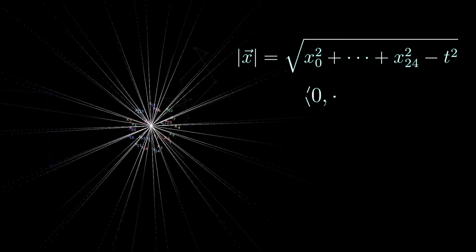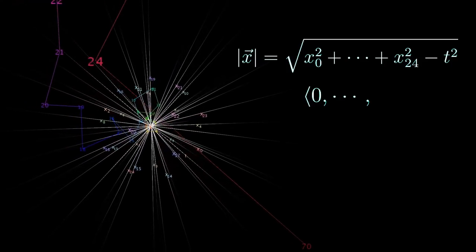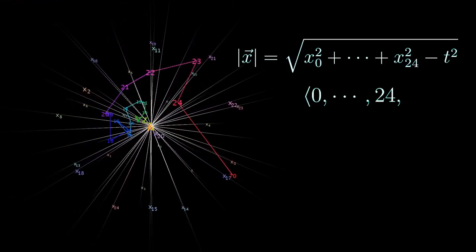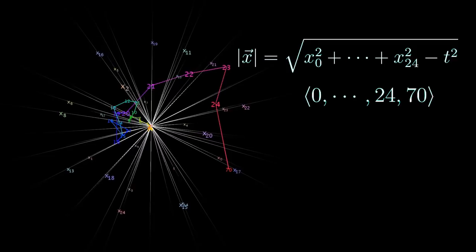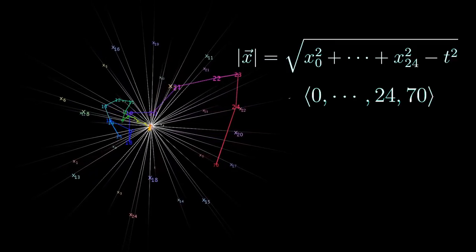Conway and Sloan took the following magical vector 0, 1, 2, 3, up to 24, 70. And this is called a vial vector drawn with that greek letter rho.